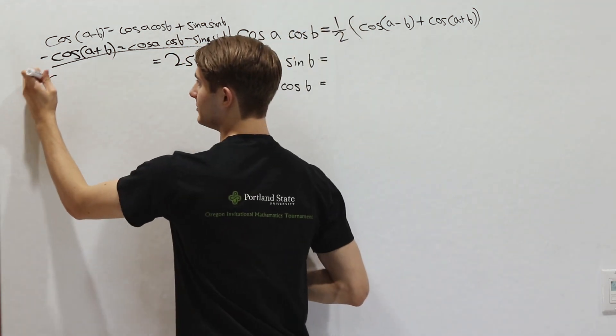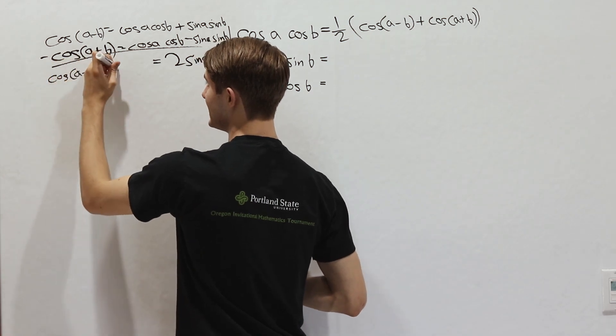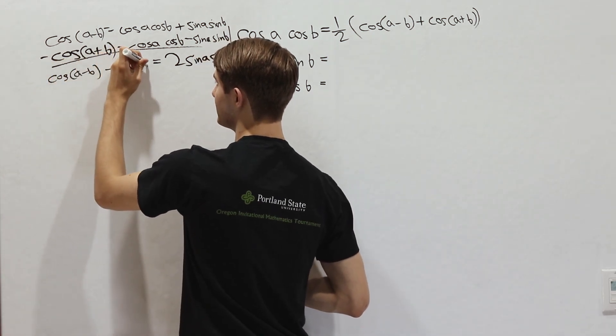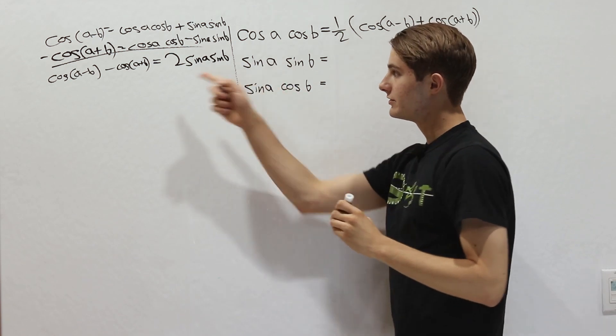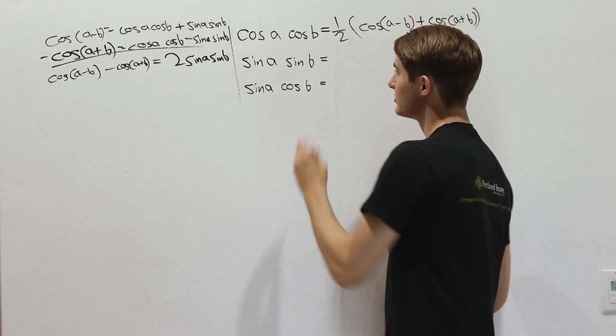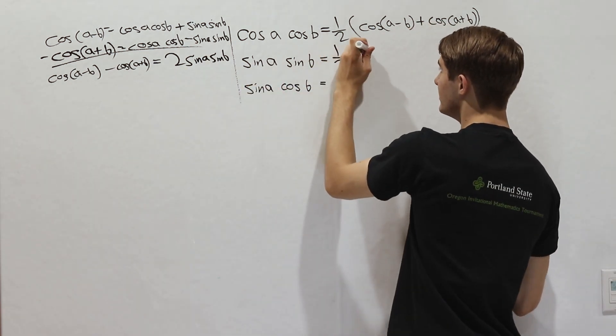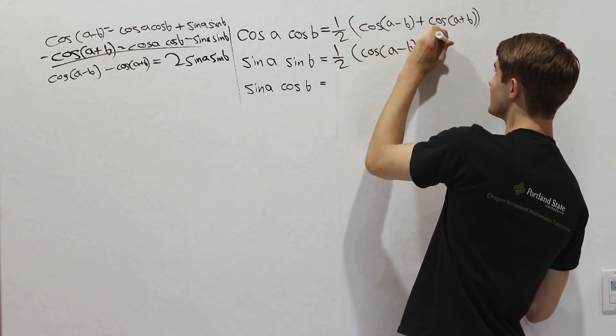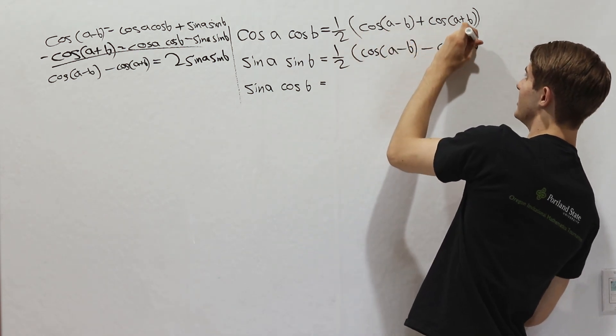Then on the left side, we get cosine a minus b like before, and then minus cosine a plus b. So if we want to take sine a sine b by itself, we get one half cosine a minus b minus cosine a plus b.